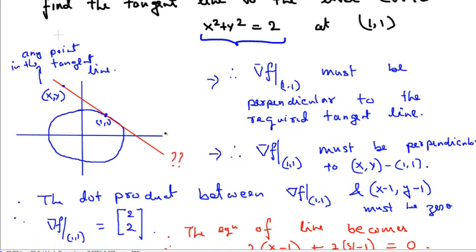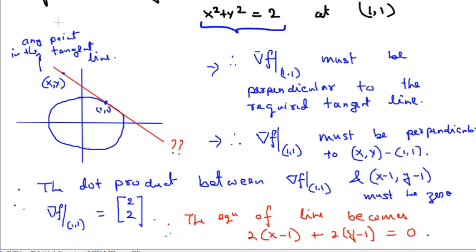The gradient must be perpendicular to any point in the tangent line subtracted from the given point on the level curve, because the difference of these two vectors — these two points — will lie on the tangent line. Once you have that, you have the equation of the tangent line, because orthogonality of these two vectors means the dot product between them must be 0. So we evaluate the gradient of f at (1,1), which gives us (2,2), and we take the inner product of that gradient with the difference of the arbitrary vector (x,y) and the given vector (1,1). We get 2(x−1) + 2(y−1) = 0.